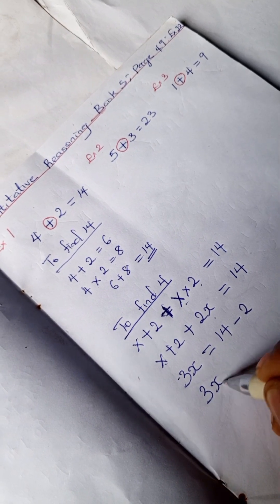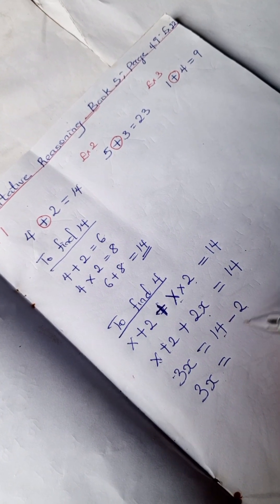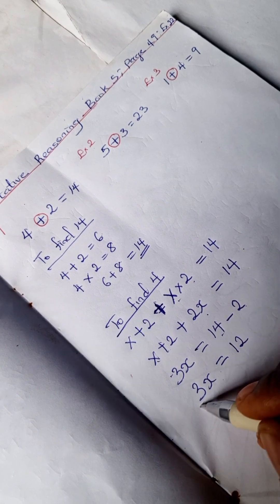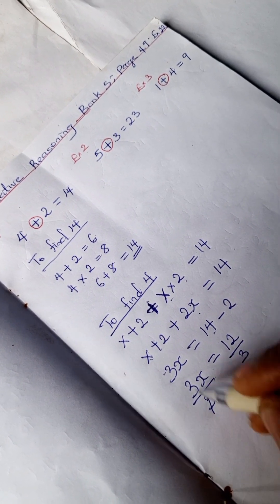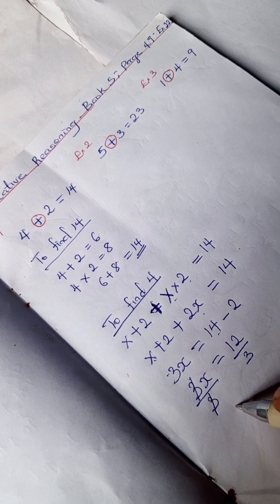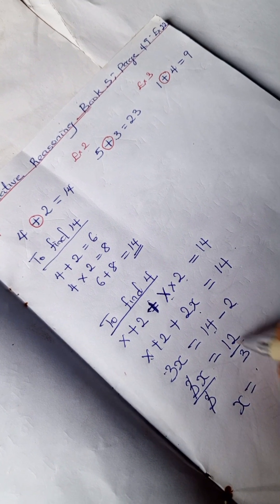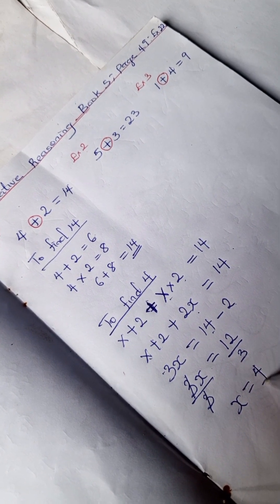So we have 3x equals 14 minus 2, which is 12. We're going to divide both sides by 3. This 3 will cancel out, so x equals 12 divided by 3, which is 4.